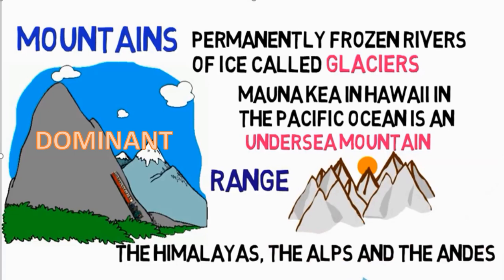Let us discuss about mountains. Mountains are termed highly elevated. They are generally different from other land features in height and shape, and have an uneven sloping surface. They are broad at the bottom and narrow at the top. The Himalayas in southern Asia, the Rockies in North America, and the Andes are some examples of mountains. Mauna Kea in Hawaii in the Pacific Ocean is an undersea mountain. The chain of mountains is called mountain ranges.